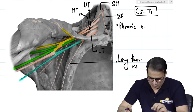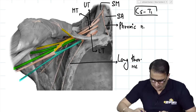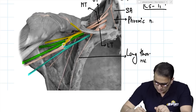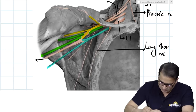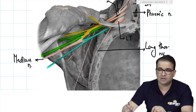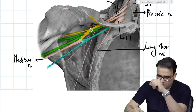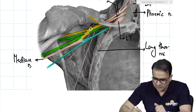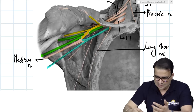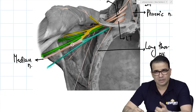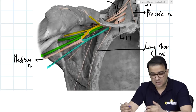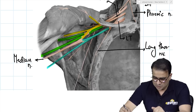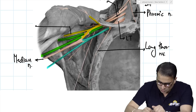The median nerve is formed here — by the lateral root from the lateral cord and the medial root from the medial cord. When identifying the median nerve in a brachial plexus picture, always look at its origin: lateral root plus medial root. The lateral cord has three branches — called LML branches: L is the lateral root of the median nerve, M is the musculocutaneous nerve, and the other L is the lateral pectoral nerve, which supplies pectoralis major and minor and pierces the clavipectoral fascia.